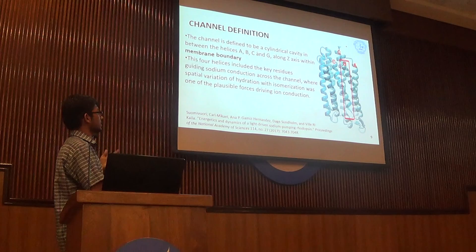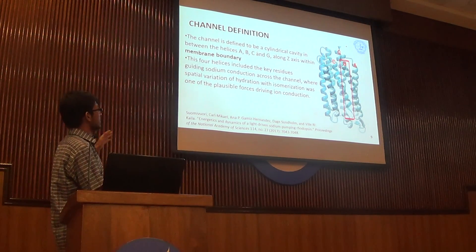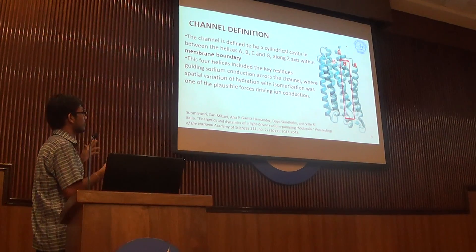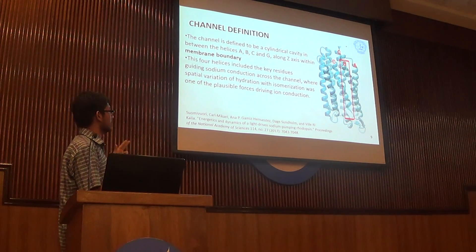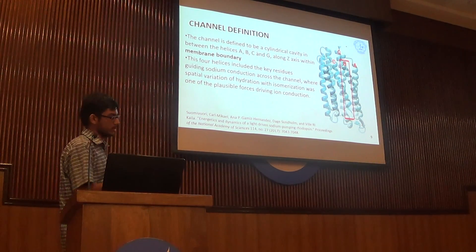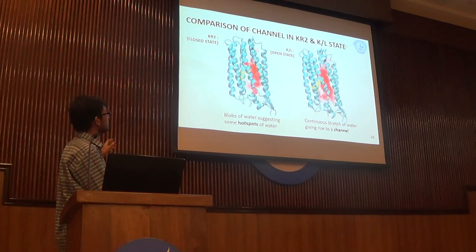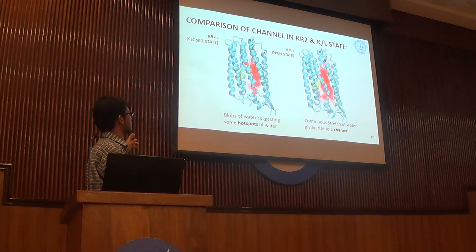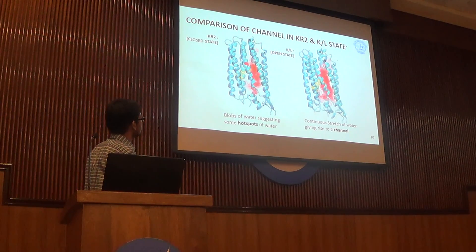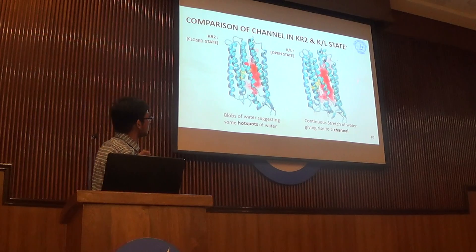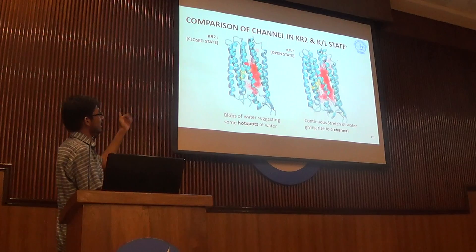Next, we defined a channel for simplicity of our water analysis. The channel has been defined as a cylindrical cavity between helices A, B, C, and G. These four helices also include the three residues guiding sodium conduction along the channel. As you can see, this is how the channel looks in the closed state and in the open state. In the closed state, there are some disconnected blobs of water suggesting hot spots of water inside the channel. But in the open state, there is a continuous stretch of water, suggesting that the water has formed a channel.